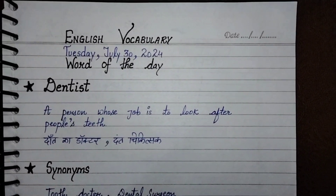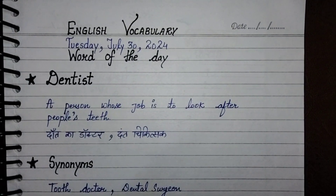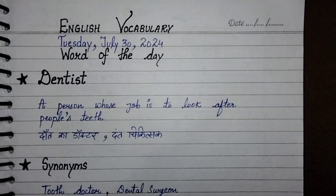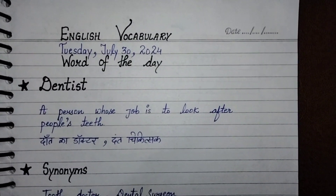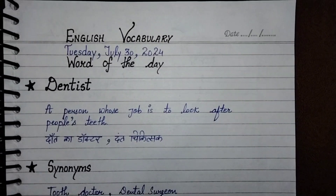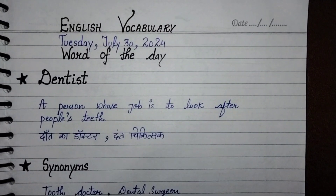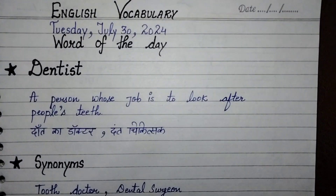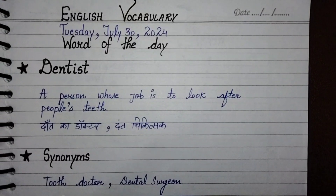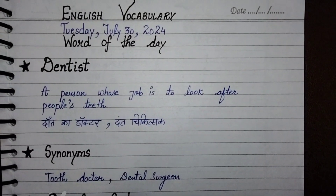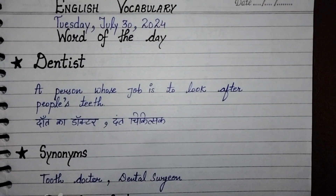Hello everyone, welcome to Universe is Unique. Today, Tuesday July 30, 2024, the English vocabulary word of the day is 'dentist' — D-E-N-T-I-S-T — dentist: a person whose job is to look after people's teeth.